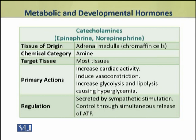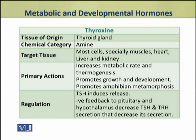Their secretion is stimulated by sympathetic stimulation. Another major metabolic hormone is thyroxine, produced by the thyroid gland. It is an amine hormone and it targets most cells of the body, especially muscles, heart, liver and kidney. Its primary actions include increasing the metabolic rate and thermogenesis. It promotes growth and development and also promotes metamorphosis in amphibians. The thyroid stimulating hormone from the pituitary induces its release from the thyroid gland, while its secretion is controlled by negative feedback to the pituitary and hypothalamus, decreasing TSH and TRH secretions.